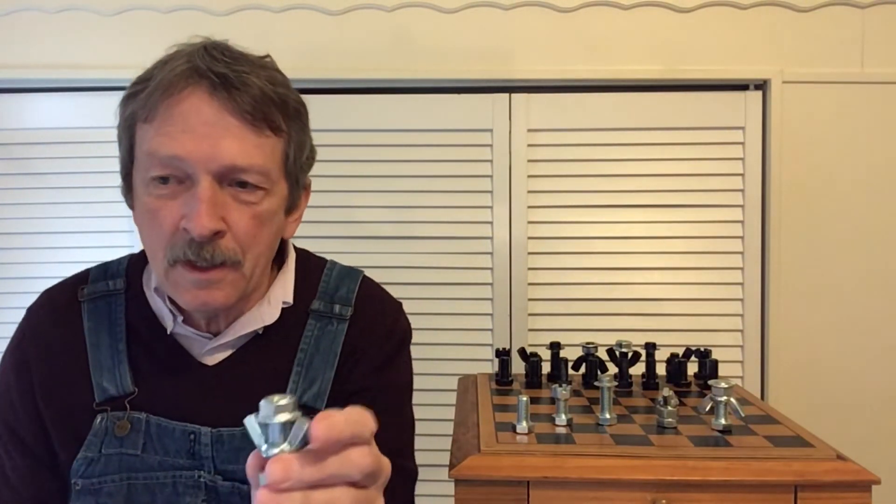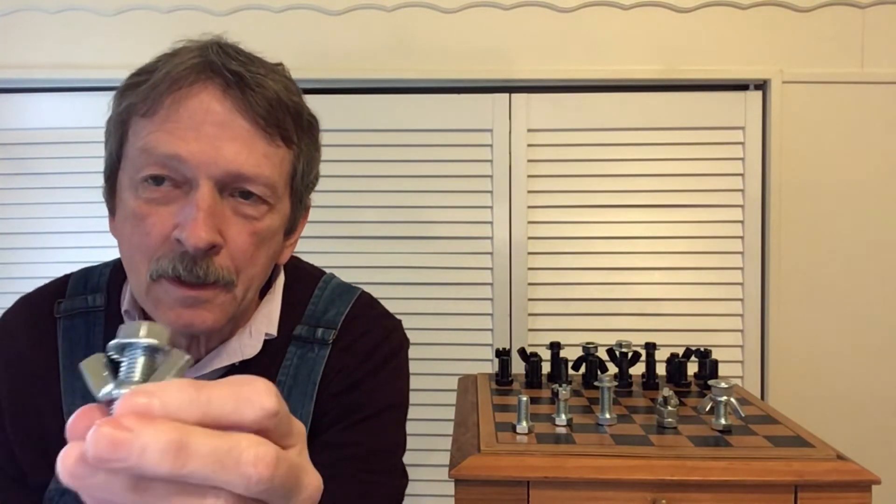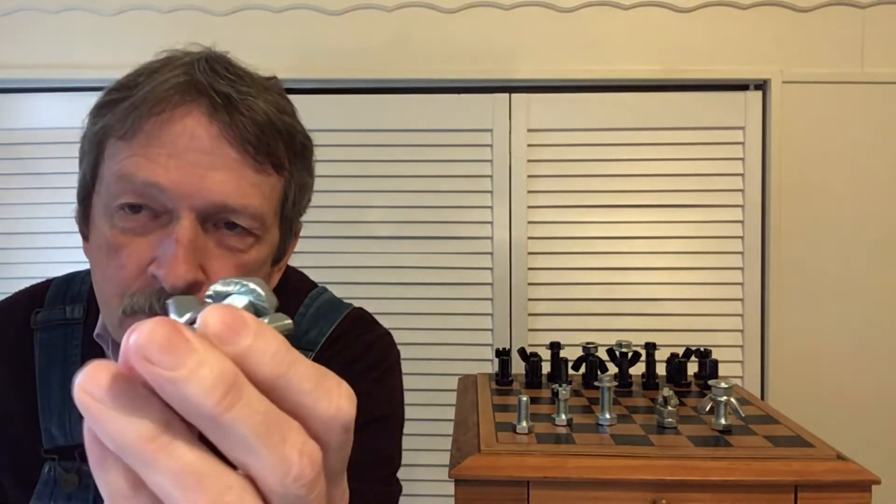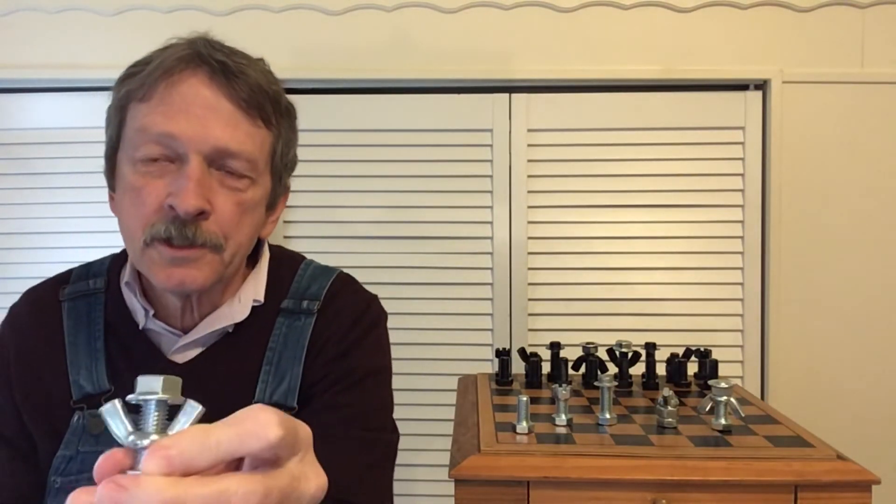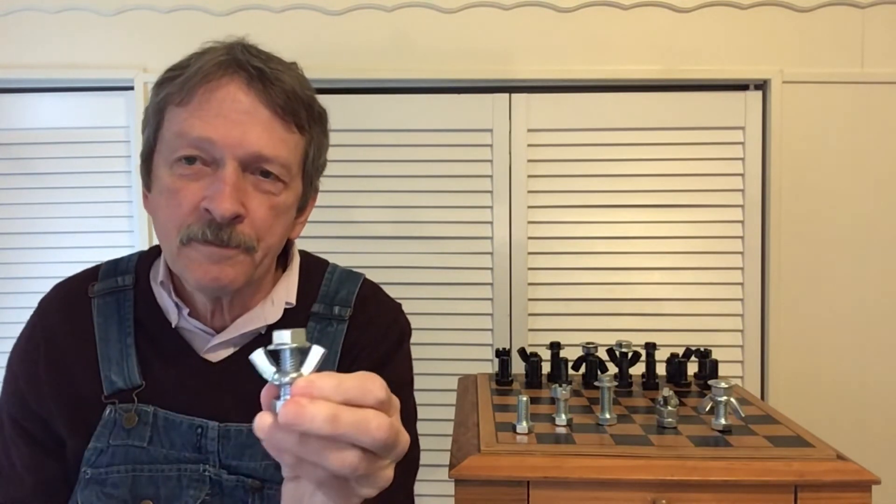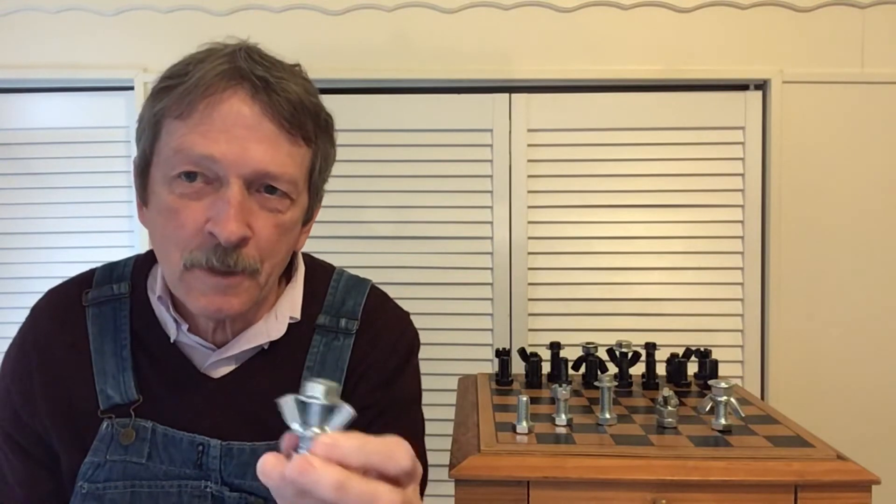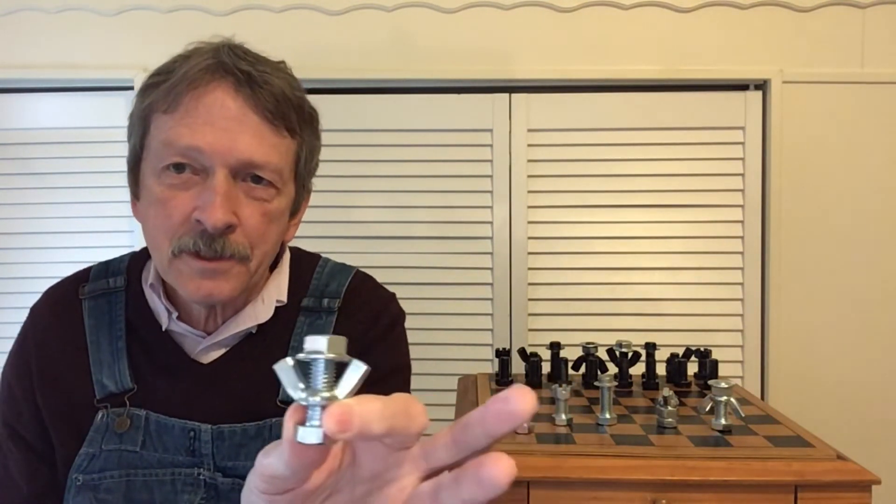And here's the king. Also using a locking hex nut. You can see the locking part there down below. Only his is on right side up. That's his crown. And then he's got a wing nut representing his arms. Only his arms are uplifted. And so there's the king.